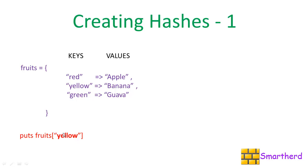We just have to simply write puts fruits subscript yellow. In arrays, we used to write fruits subscript 0 or 1 or 2 like this. But here, we just have to write the key name fruits subscript yellow. This is going to print banana.